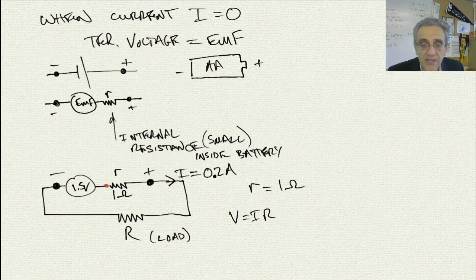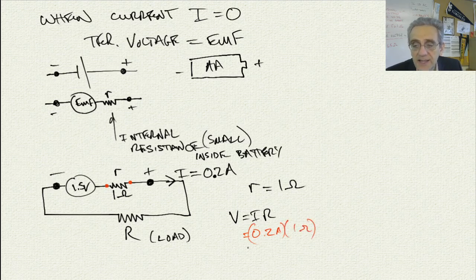Let me use different colored points here. What I'm trying to calculate here is the voltage drop across these red dots. That's going to be 0.2 amps times 1 ohm. That's going to give me 0.2 volts.